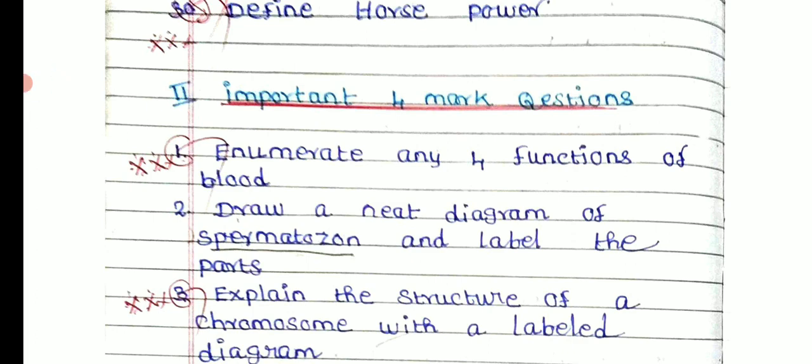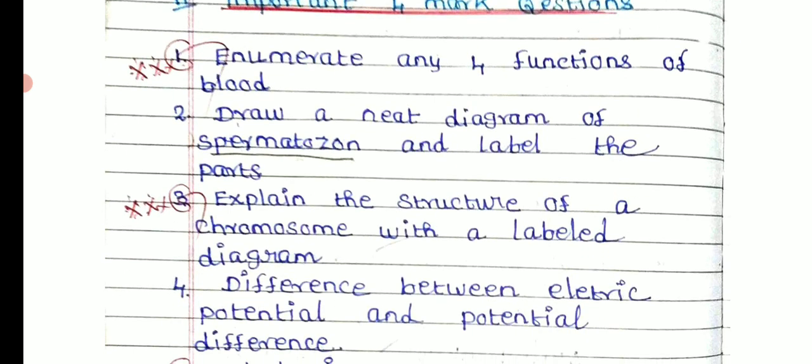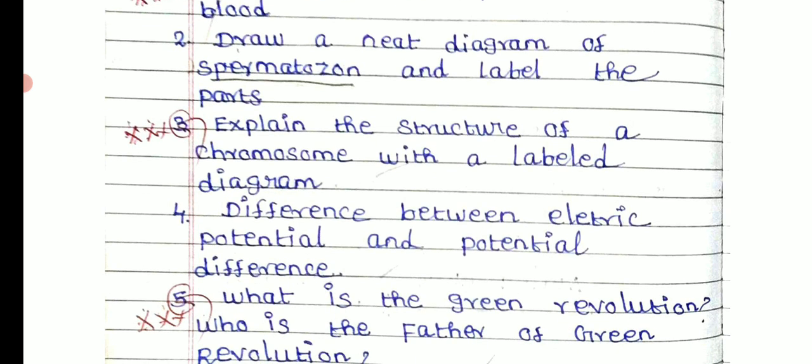Draw a neat diagram of spermatozoa, label and explain the parts. Explain the structure of chromosome with a labelled diagram. What is the difference between electric potential and potential difference?